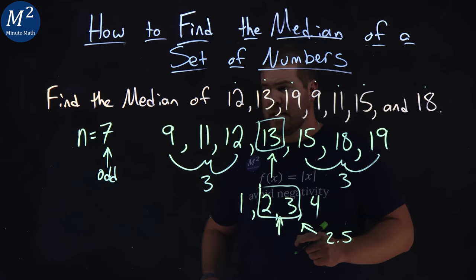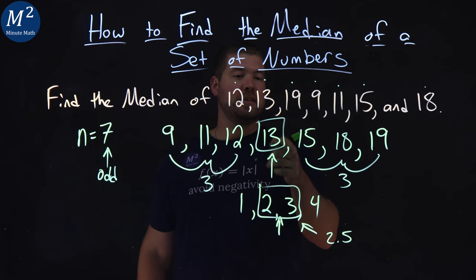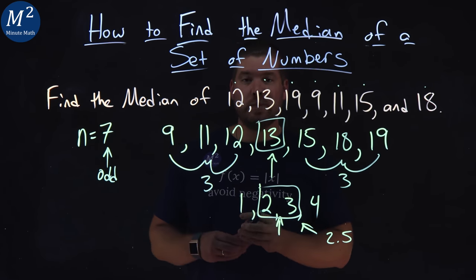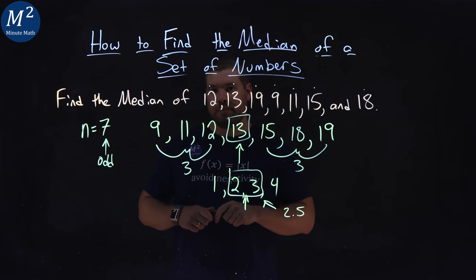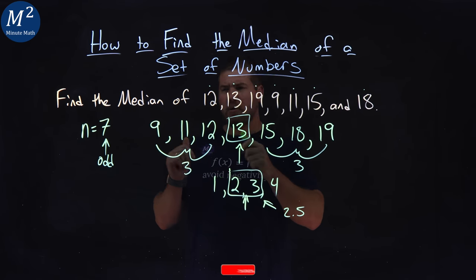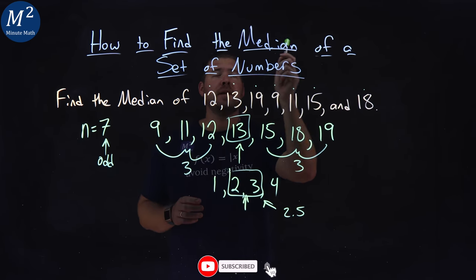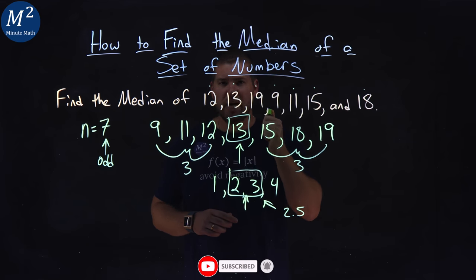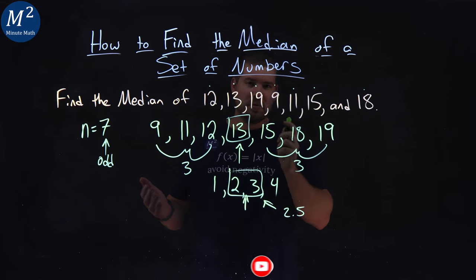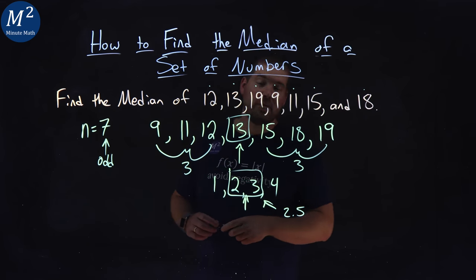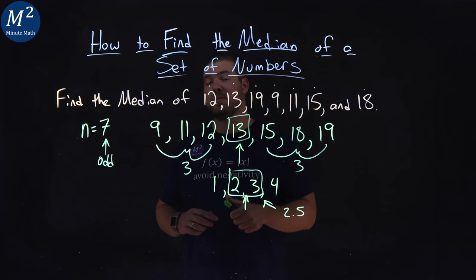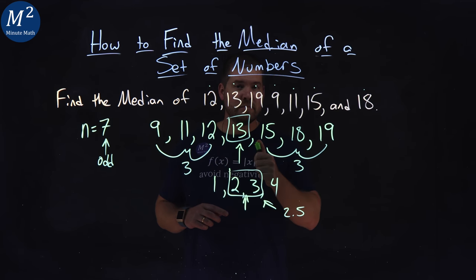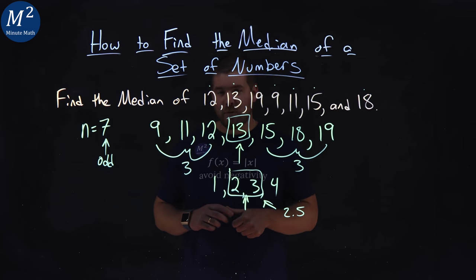But in our case here, we're just dealing with the list that we have, and we found the median to be 13. I hope you learned something here on how to find the median of a set of numbers. If you did, make sure you like this video and subscribe to our YouTube channel — this helps us make more of these free math lessons for you and for everyone else. So as always, thanks for watching.